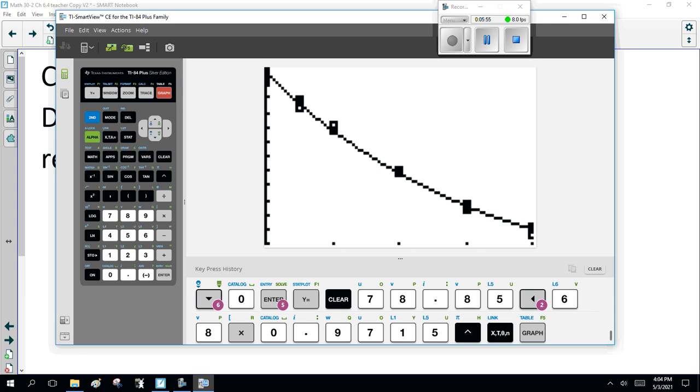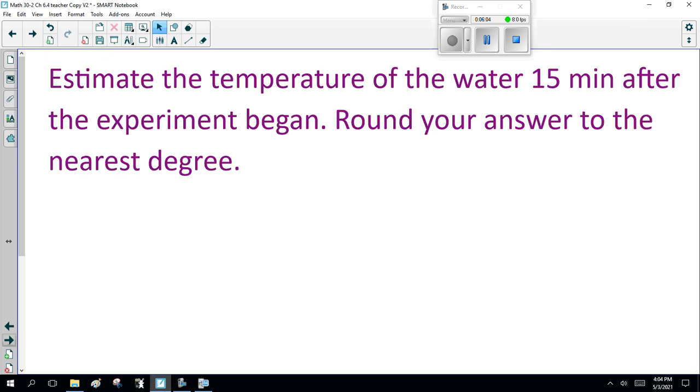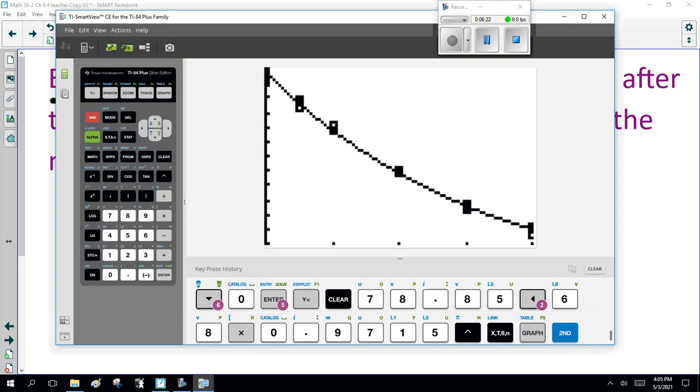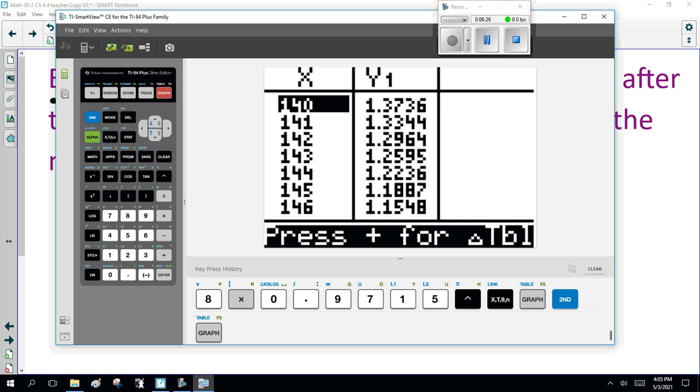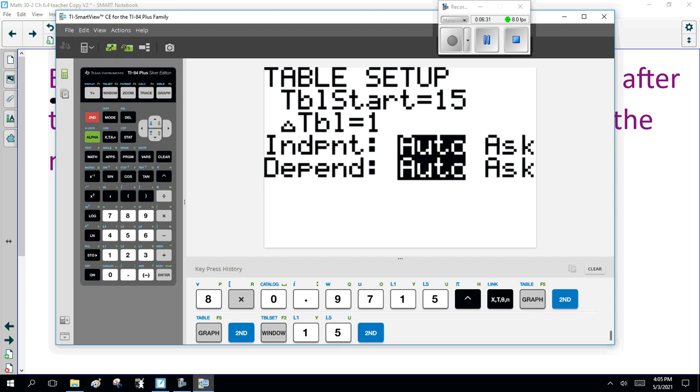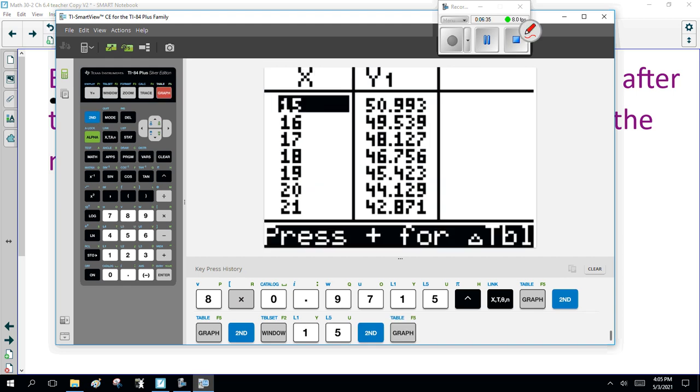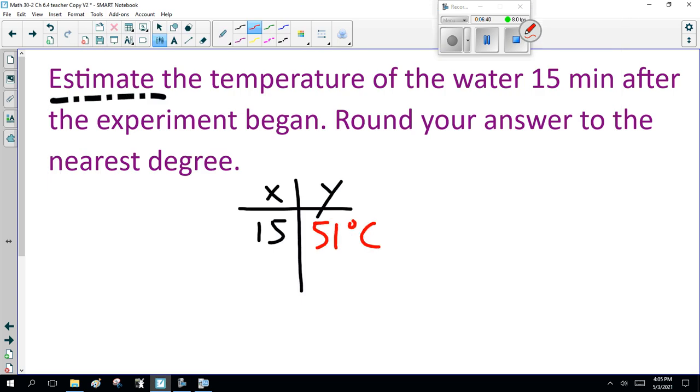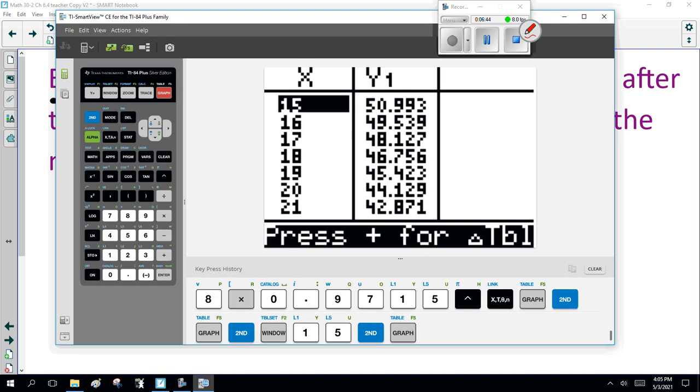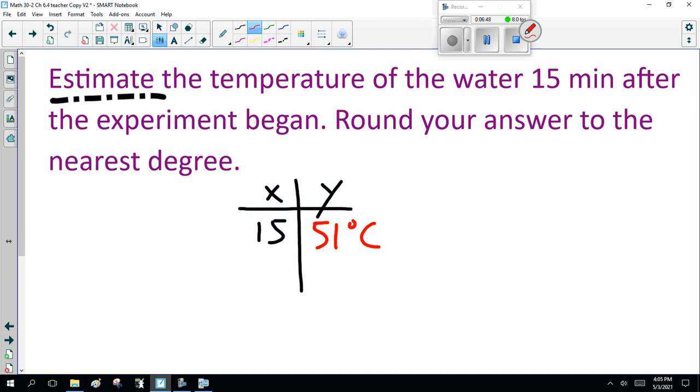And of course, we have to answer some questions here. First, estimate the temperature of the water 15 minutes after the experiment started. X is 15. That's my temperature. Easy enough. Table. Now, remember last time I set it at 1, so X starts at table instead of 15. 50.99, 50 degrees. That's 50.99. Now, if you made a mistake putting in the data, your answer will be off by a bit.